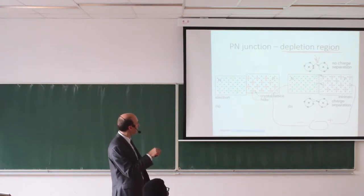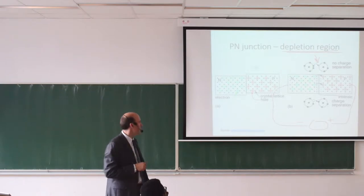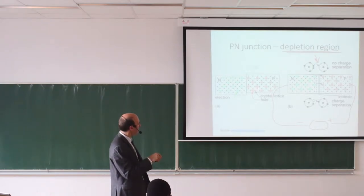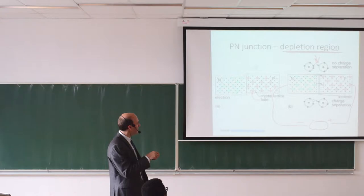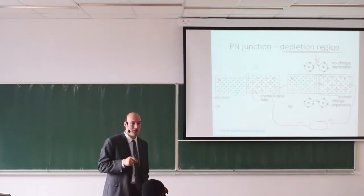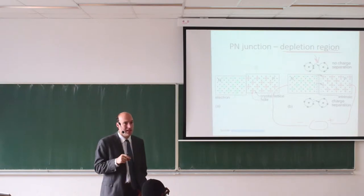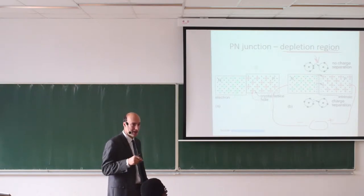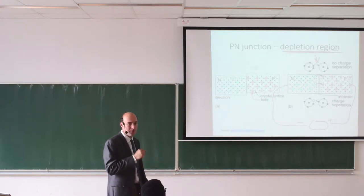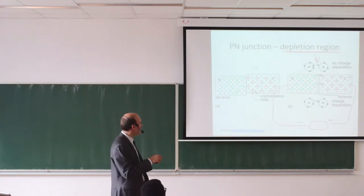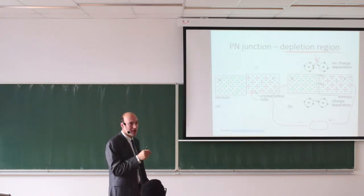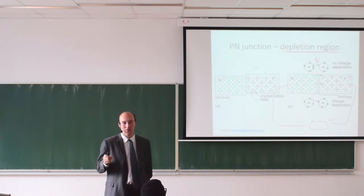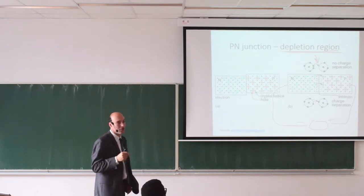The same happens in the p-type semiconductor. We have the basic material — the black dots are silicon — and the red plus signs represent places where the silicon atom has been replaced by an atom from the third group. In this area, one electron is missing, represented by the pluses. You can imagine it as an area with a positive charge, but in reality it is a lack of negative charge.